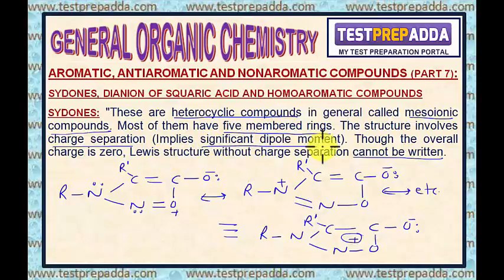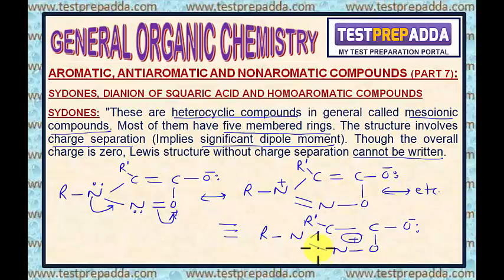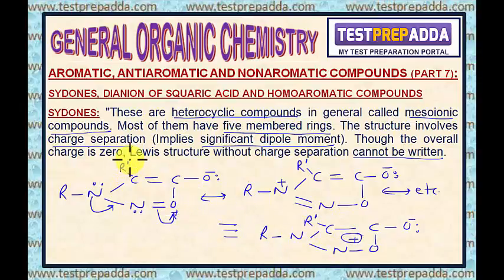Significant dipole moment will be there. Different resonating structures can be written like this. If I give the lone pair of this nitrogen here, the bond will shift in this manner. And this way we can write this resonating structure, and in a similar manner we can write others. And this is the resonance hybrid. Dear students, let me tell you that cidones are stable aromatic compounds that undergo aromatic substitutions when R' is hydrogen.